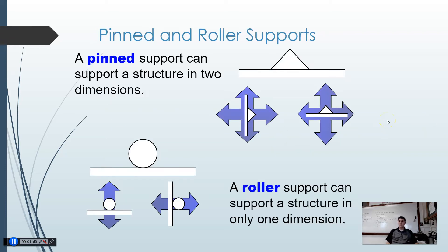When we talk about trusses we have two kinds of supports: a pinned support and a roller support. A pinned support prevents motion in any direction — it can support a structure both up-down and side-to-side. It can be oriented vertically or horizontally, but either way it doesn't allow any left-right or up-down movement.